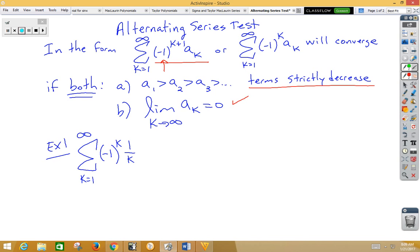It's frequently easier to do part b first because if the limit is not zero, there's no point in figuring out whether it increases or decreases. So let's start doing a couple examples.